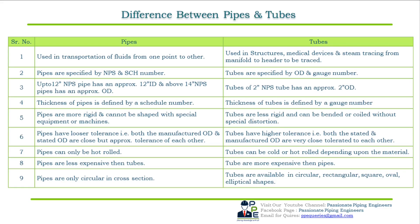Now for the difference between pipes and tubes: Pipes are used in transportation of fluids from one point to another, whereas tubes are used in structural applications, medical devices, and steam tracing from manifold to header. Pipes are specified by NPS and schedule numbers, while tubes are specified by OD and gauge numbers.